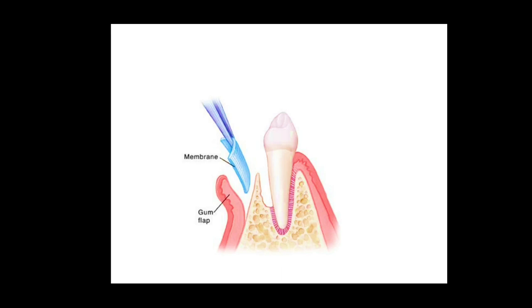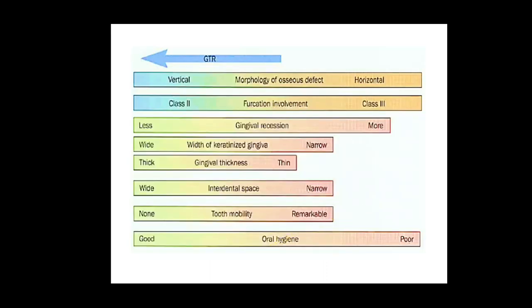GTR is more predictable in vertical defects, Class 2 furcation involvement, in teeth with less gingival recession, teeth having wide keratinized gingiva, thick gingiva, and in those teeth with wide interdental space. It is most favorable in teeth with minimum mobility and in those persons with good oral hygiene.